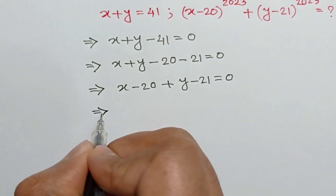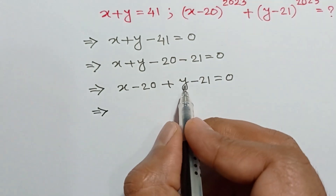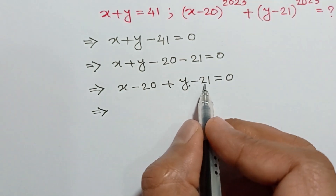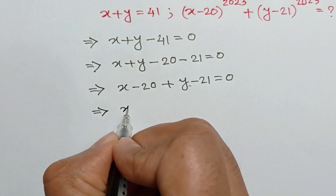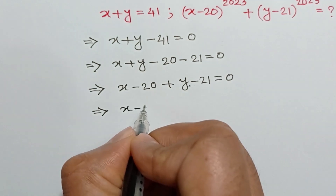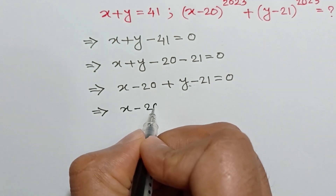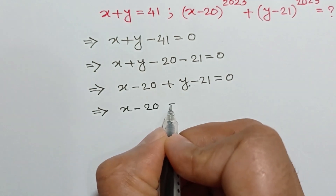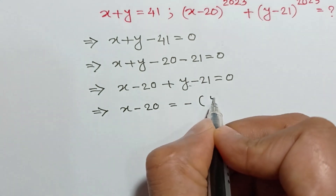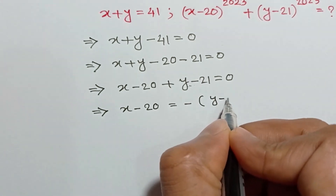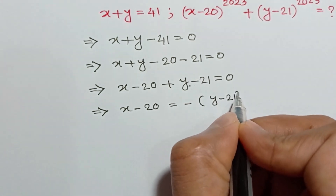Taking y minus 21 to the right side, we will get x minus 20 is equal to negative of (y minus 21).